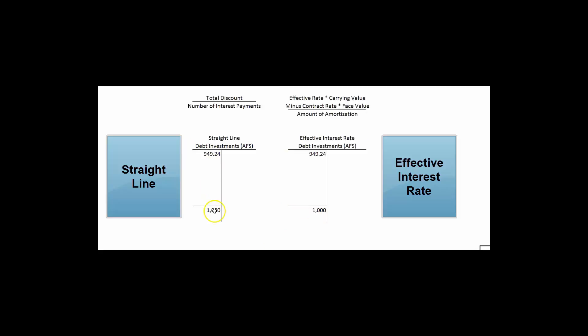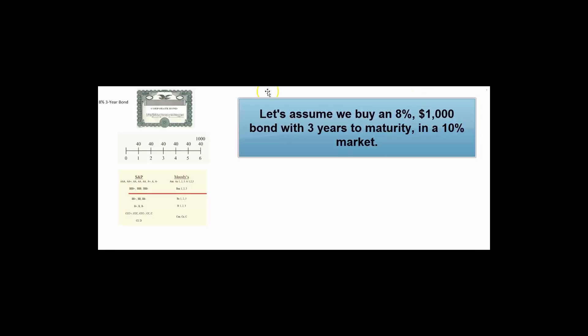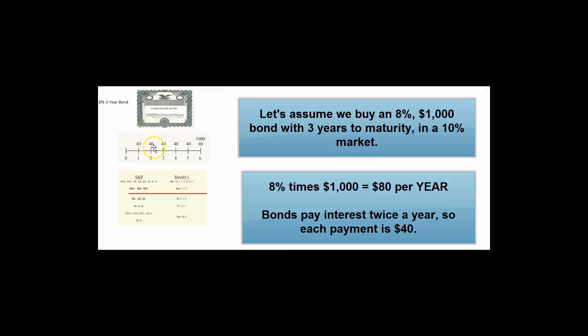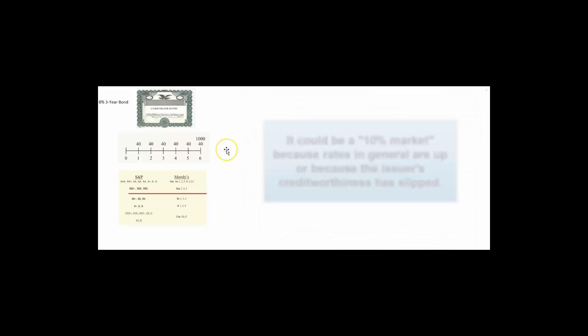Whether we're using the straight-line method or the effective interest rate method, we're going to take a bond from its discounted price up to face value at maturity. Let's assume we buy a $1,000 corporate bond with a contract rate of 8%. That means we're going to receive $40 every six months — 8% times $1,000 face is $80, divided by two because bonds pay interest twice a year. Let's assume interest rates have gone up, or maybe the credit rating of this company has gone down and there's more risk, so we require a 10% return to buy this bond.